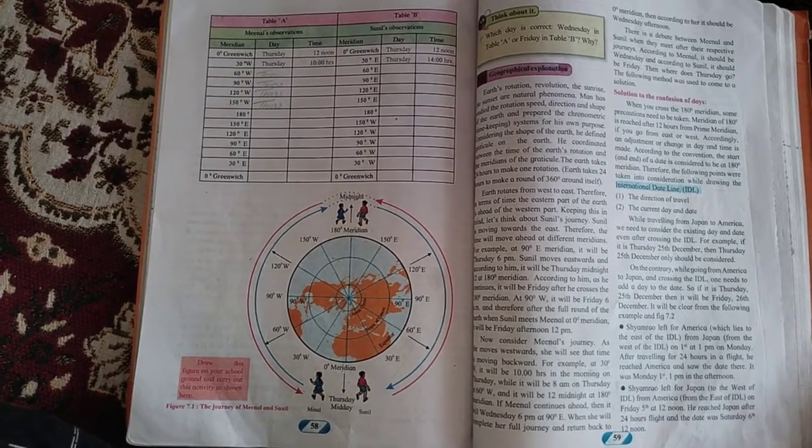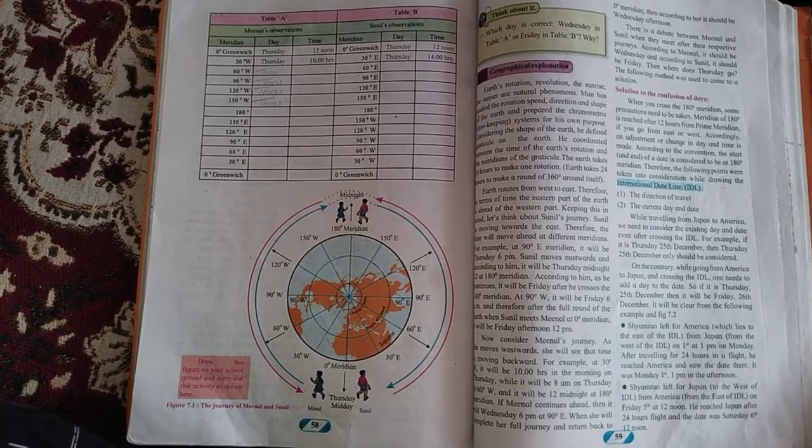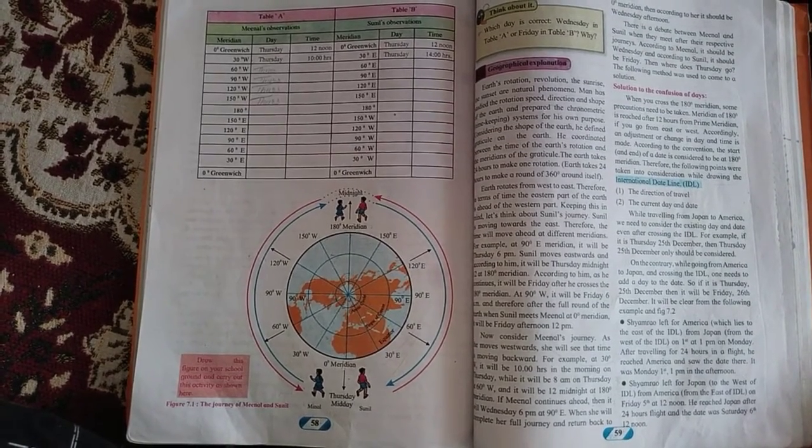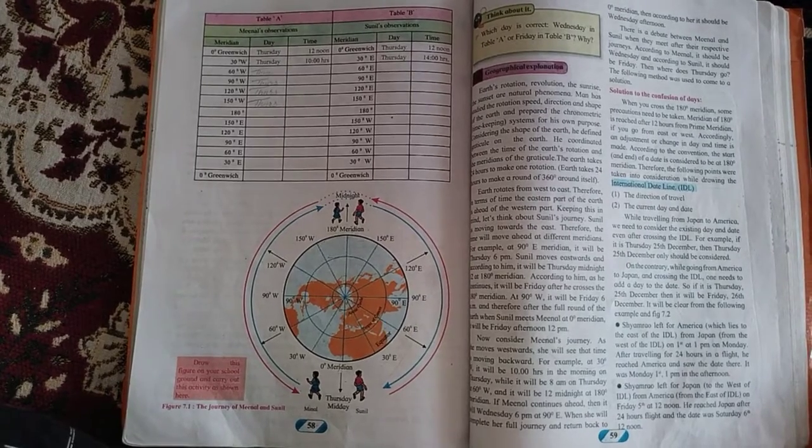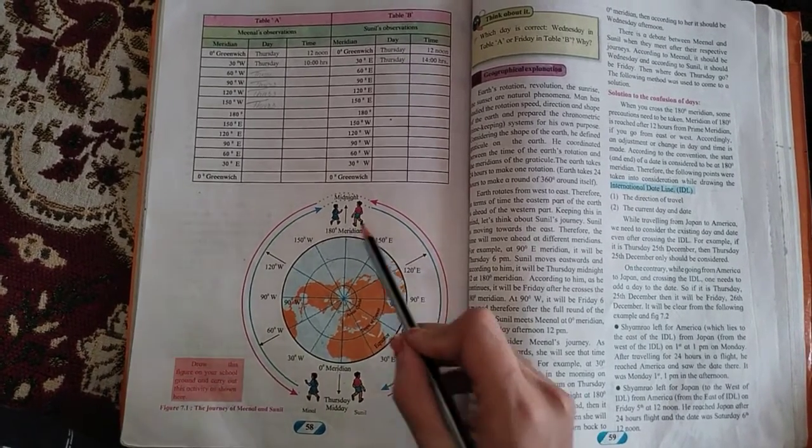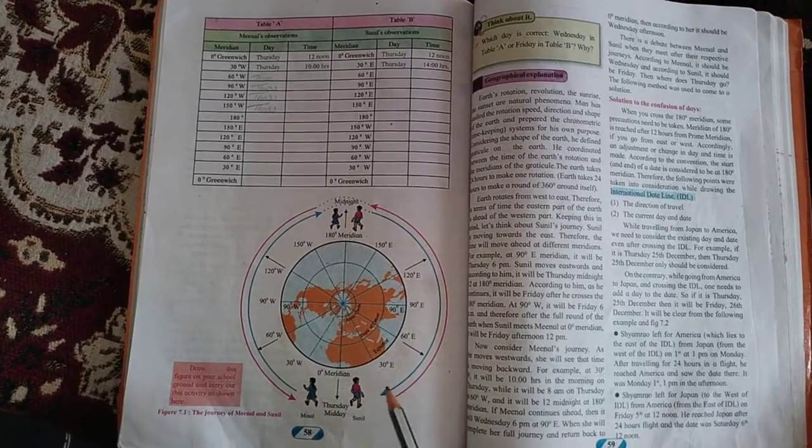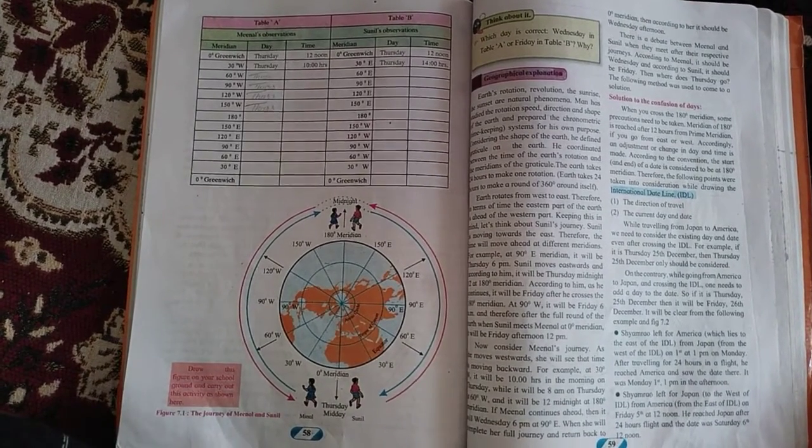In other words, is drawn in such a way to avoid passing over the land. Now students, let us understand in detail. Due to rotation of earth, different places observe different timings of sunrise, sunset and midnight.